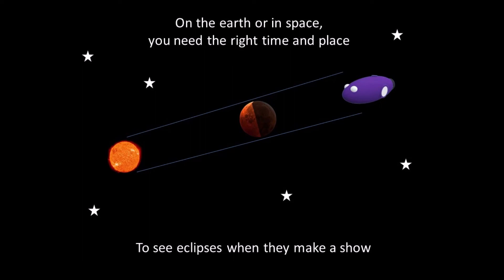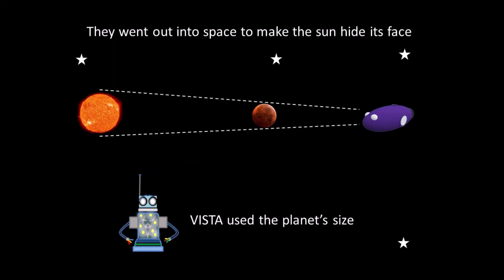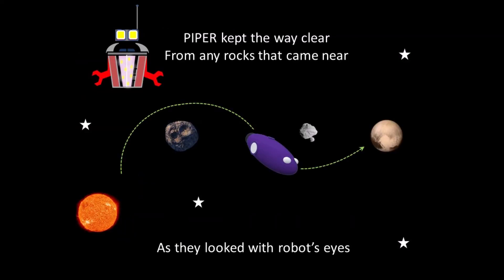On the earth or in space, you need the right time and place to see eclipses when they make a show. They went out into space to make the Sun hide its face. VISTA used the planet's size. PIPER kept the way clear from any rocks that came near as they looked with robot's eyes.